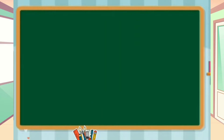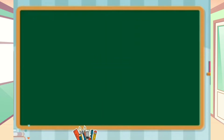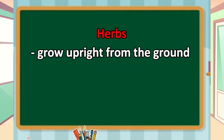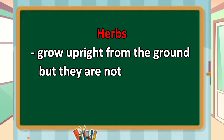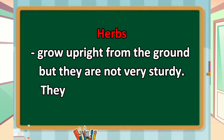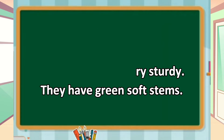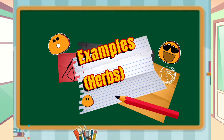The first classification are the herbs. Herbs grow upright from the ground, but they are not very sturdy. They have green, soft stems. Samples of herbs: